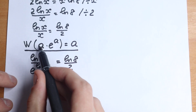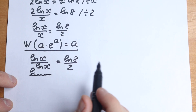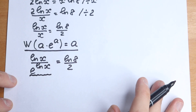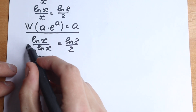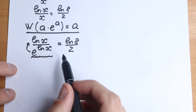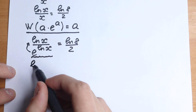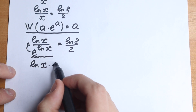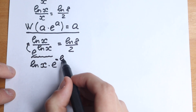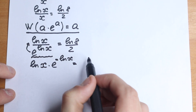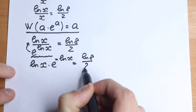We've created the e, but we need the same expression appearing twice. Let's bring the e from the denominator to the numerator by putting a minus in the exponent. So we have natural log x times e to the power of minus natural log x, equal to natural log 8 over 2.